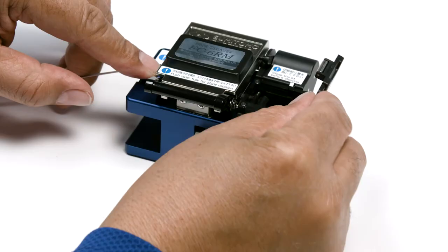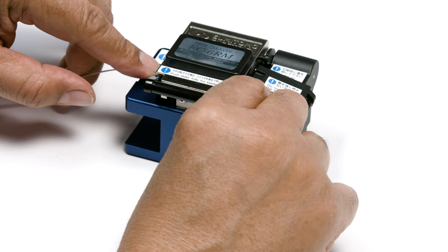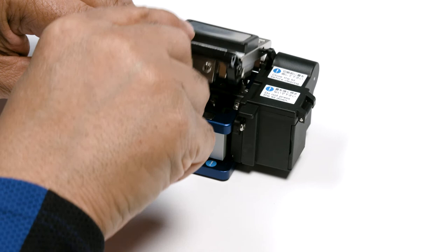Close the cleaver's main lid. Close the shard collector lid gently. Push the blade carriage inward fully. Open the main lid and remove the holder.